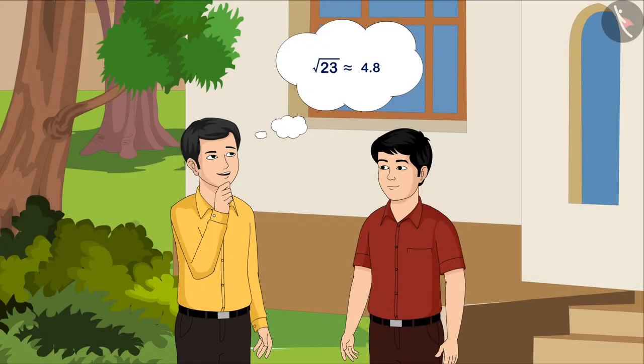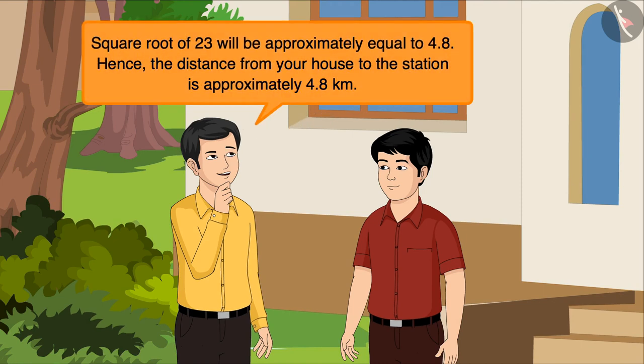In this way, we estimated the square root of 23 and Vishal solved the riddle. Hence, the distance from Amit's house to the station is approximately 4.8 km.